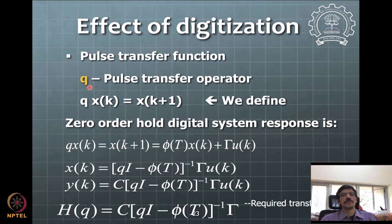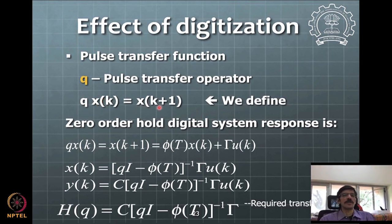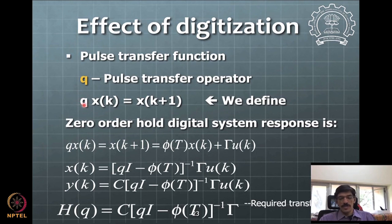To get a transfer function, we define an operator q called the pulse transfer operator, such that when q operates on x(k) it shifts the state by one sampling instance: q·x(k) = x(k+1), q²·x(k) = x(k+2), and so on. This is analogous to the Laplace variable s in the continuous domain — we now express transfer functions in the operator variable q.